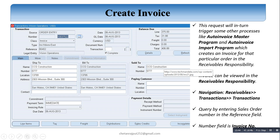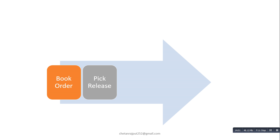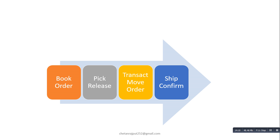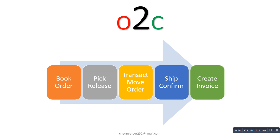In today's session, we have shown the complete Order2K Cycle Transactional Flow: first is the Book Order process, next is Pick Release, then Transact Move Order, followed by Ship Confirm where we ship material to the customer's ship-to address, and finally after ship confirmation we create the invoice. This whole process is called the Order-to-Cash Cycle Transactional Flow. If you liked this video, please subscribe to my channel for the next tutorial. Thank you!